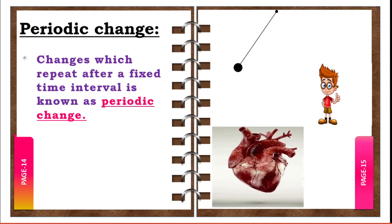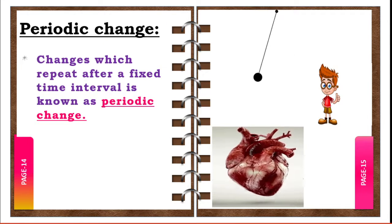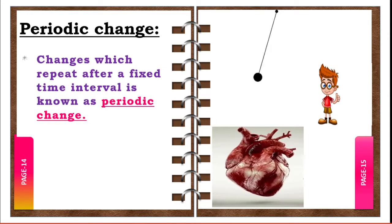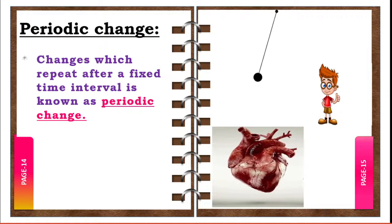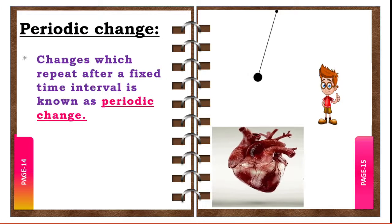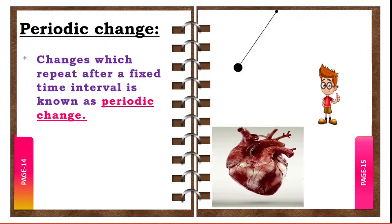Some other examples of periodic changes: the oscillation of a pendulum, heartbeat, change in phases of the moon, and occurrence of low tide and high tide — all take place at a regular interval of time. These are examples of periodic changes.